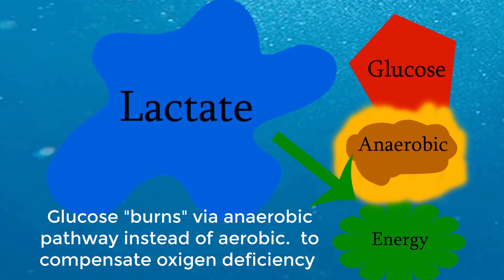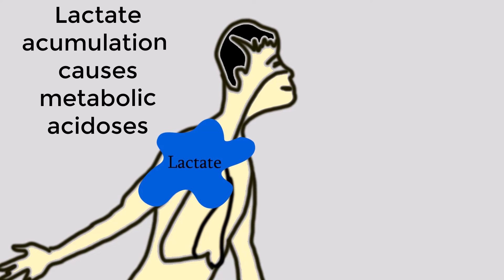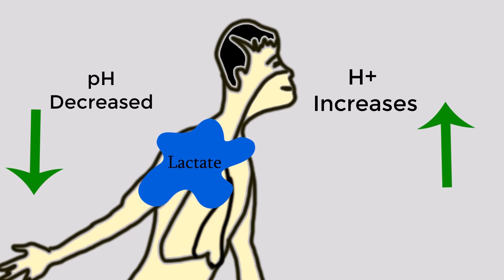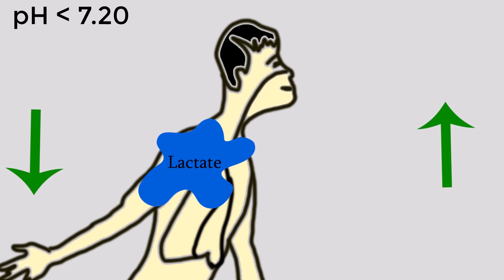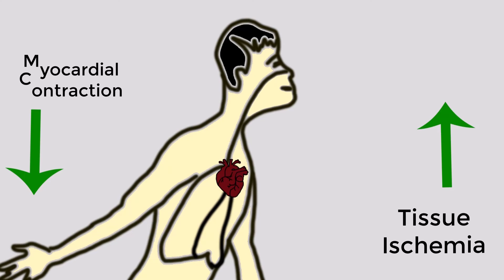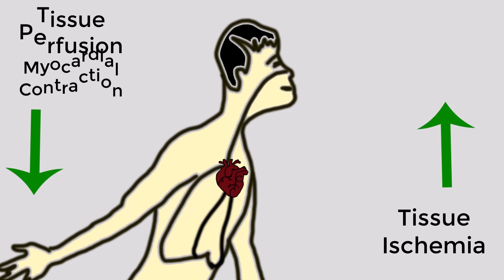While some organs such as the brain, heart, liver, and skeletal muscle can use lactate as a temporary energy source, the energy yield is less than half that of glucose. Lactate accumulation causes metabolic acidosis, a condition that leads to decreased pH and increased hydrogen ions in the blood. When pH falls below 7.2, myocardial contraction is severely depressed and peripheral blood vessels become unresponsive to catecholamines.